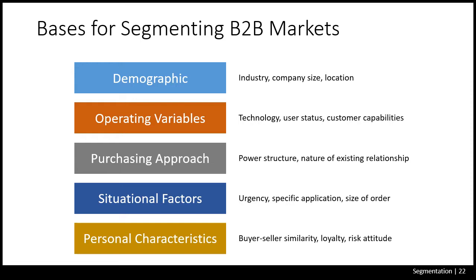Business marketers generally identify segments through a sequential process. Consider an aluminum company that first undertook macro segmentation — determining which end-user market to serve: automobile, residential, or beverage containers. It chose the residential market, then determined the most attractive product application: semi-finished material, building components, or aluminum mobile homes. It decided on building components and chose larger customers. The second stage was micro segmentation: distinguishing among customers buying on price, service, or quality. Because the company had a high service profile, it concentrated on the service-motivated segment.